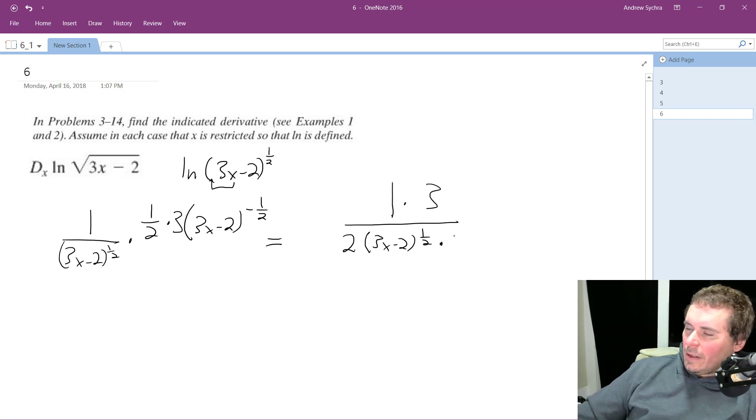And then still on the bottom, we have 3x minus 2 raised to the 1 half, because the negative 1 half is the same thing as putting it in the denominator.